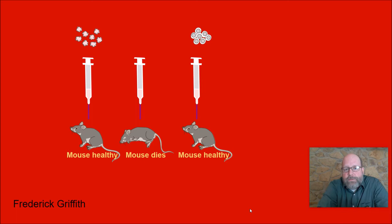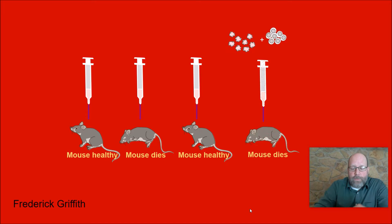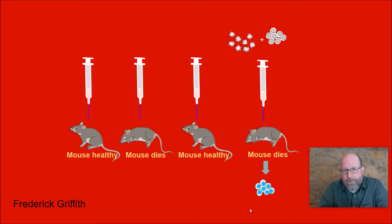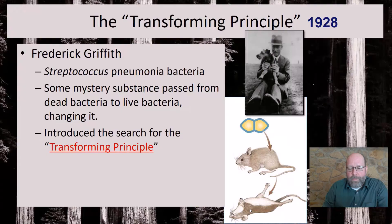Griffith heat-treated the deadly smooth bacteria to kill them, then injected those dead bacteria into mice — totally harmless, which is not surprising. But what was really interesting: he took the two bacteria together — the living harmless ones and the killed deadly ones — mixed them and injected that into a mouse, and the mouse died. When you take blood from the dead mouse, you find smooth deadly bacteria alive again. So something went from the dead deadly bacteria to the living harmless ones and transformed them into the deadly kind.